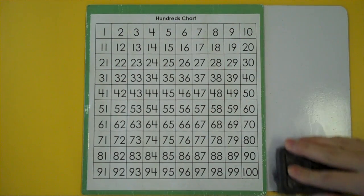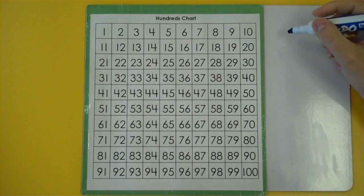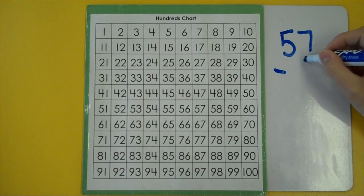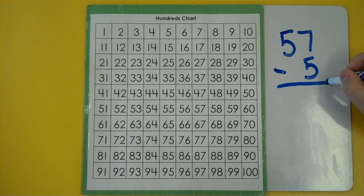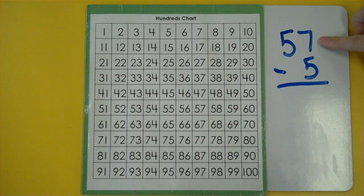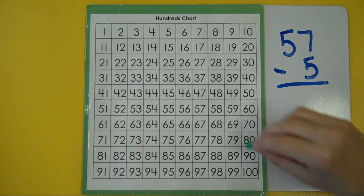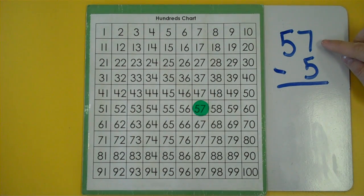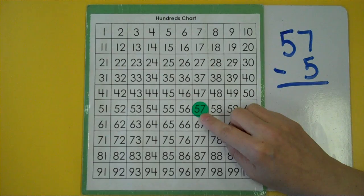Let's try an easy one to start with. Let's try 57 take away 5. I'm going to start with the bigger number. I always like to imagine what I'm taking away. If I had 57 french fries and I ate 5 of them, how many would I have left?